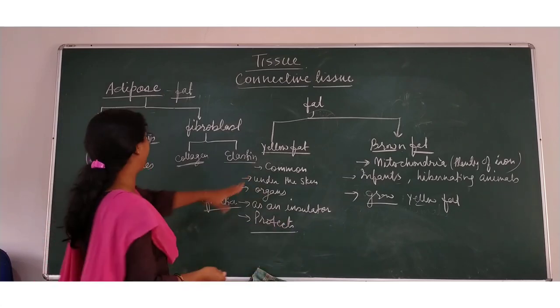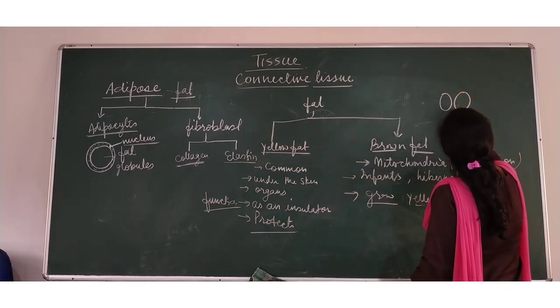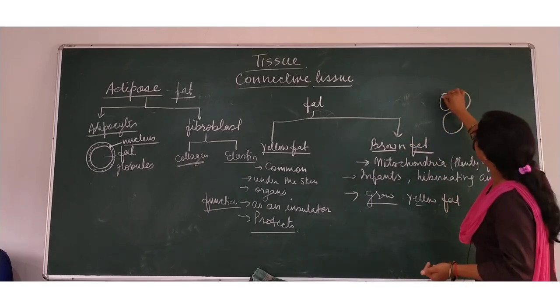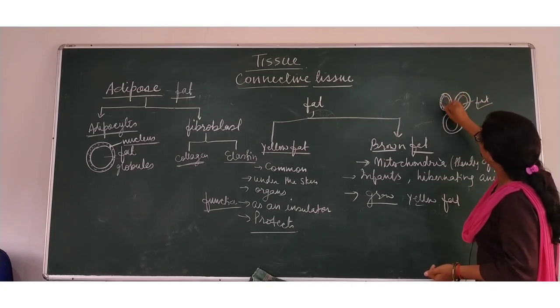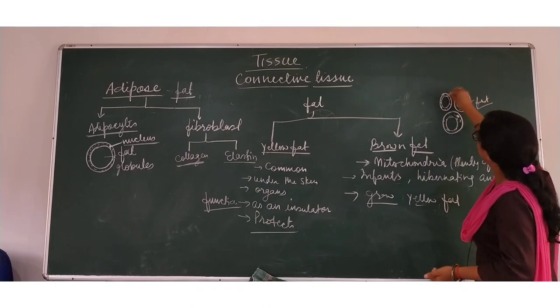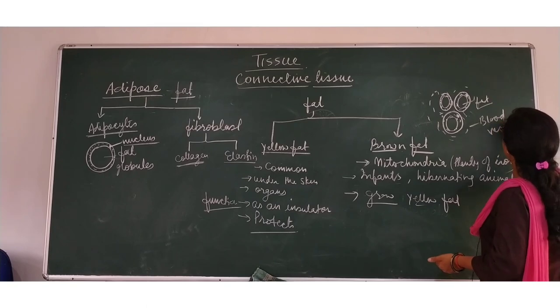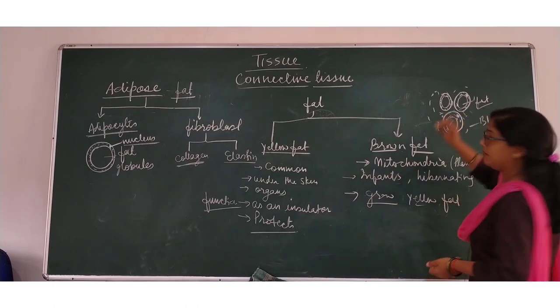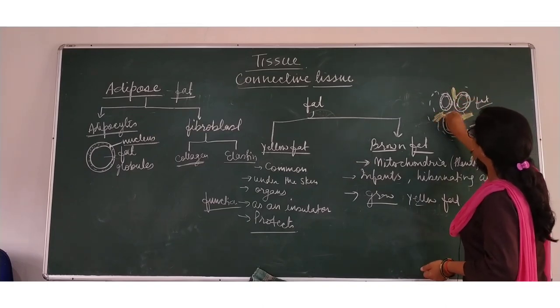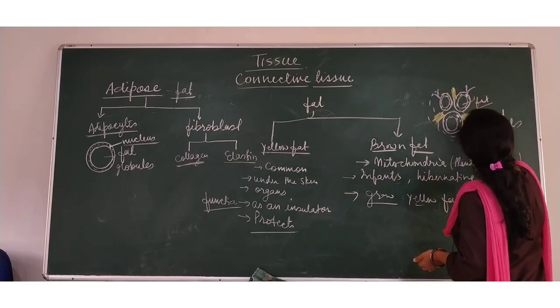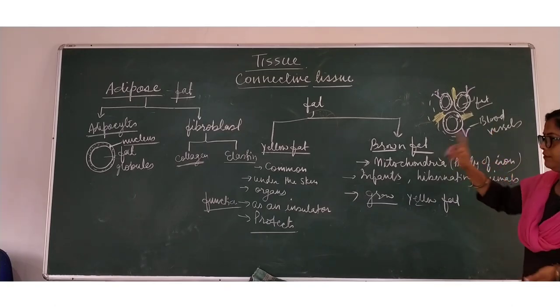If you draw the diagram of yellow fat, it will be like adipocytes. I am drawing and showing you the cells of adipocytes. Centrally located fat globules are there. And around this or at the periphery, cytoplasmic materials are there with nucleus. And around these cells, blood vessels are found. At the same time, very few fiber cells are also found. Multi-layered collagen and single-layered branched elastin fibers are found. So this is the structure of yellow fat or adipocytes.